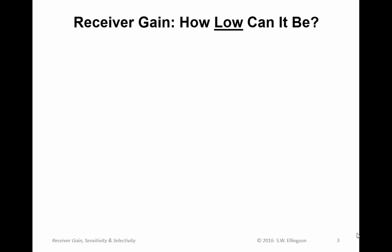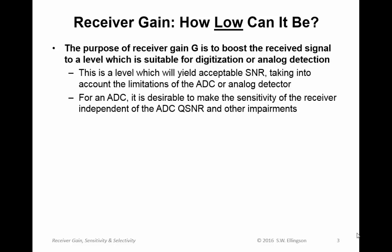So first, receiver gain. The first question I want to pose is how low can the receiver gain be? The purpose of receiver gain, which I will give the variable name G here, is to boost the received signal to a level which is suitable for digitization or analog detection. This level should yield acceptable signal-to-noise ratio, taking into account the limitations of the ADC or analog detector.